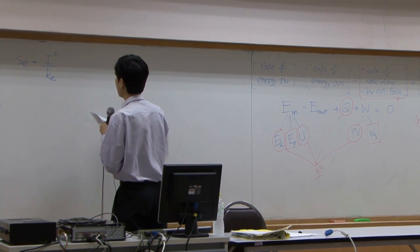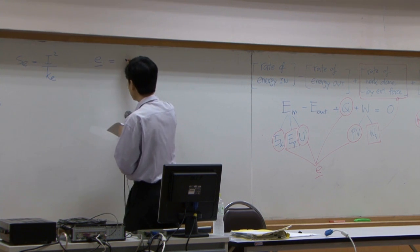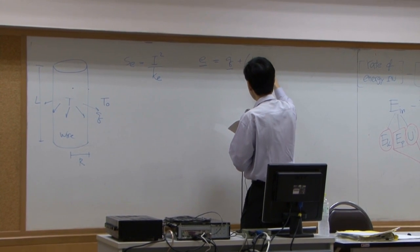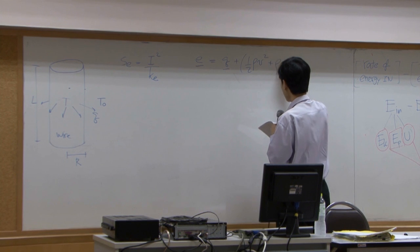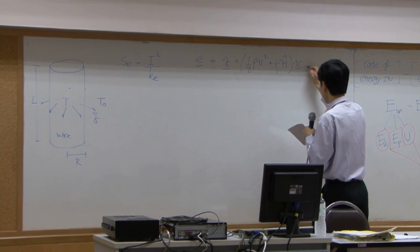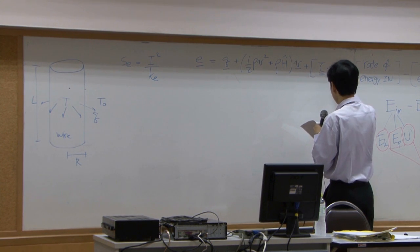Last week, we talked about combined flux E equal to Q plus 1 over 2 rho V square plus rho H V plus tau dot V.